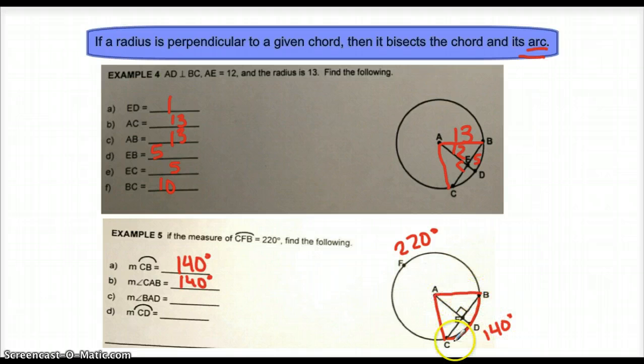Angle BAD is exactly half of this angle. We know that this radius bisects this arc. So therefore, it also bisects that angle. So that would be 70 degrees. And therefore, arc CD must also end up being 70 degrees.